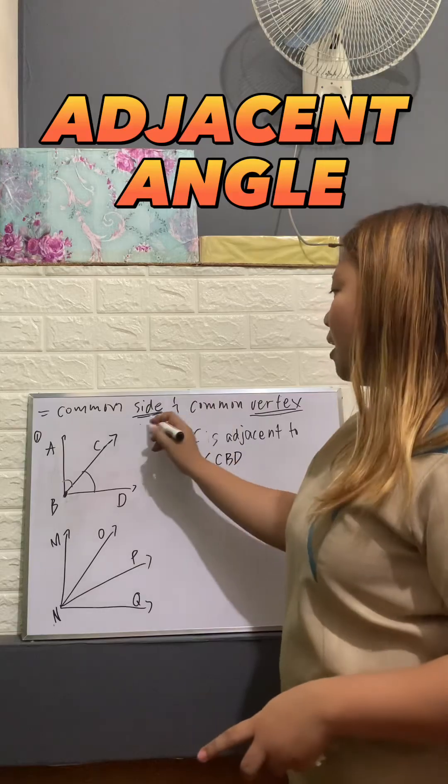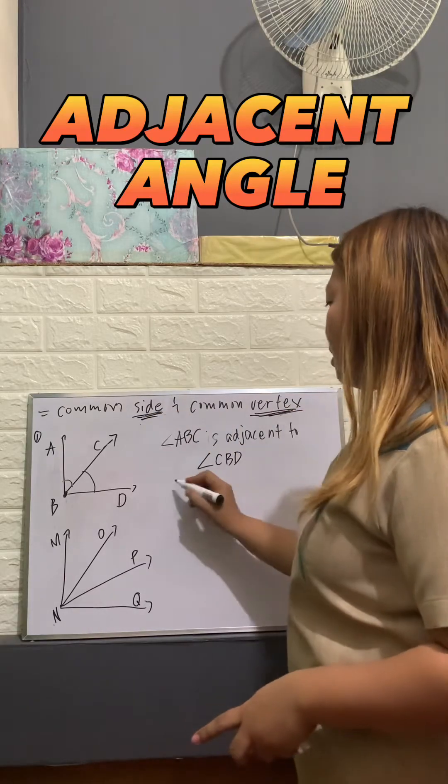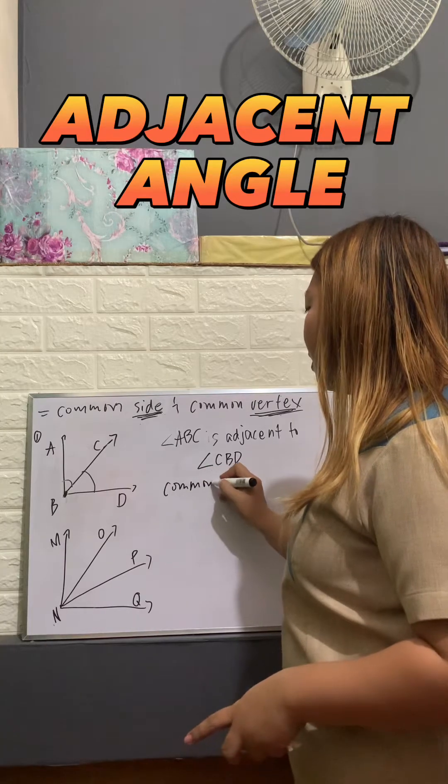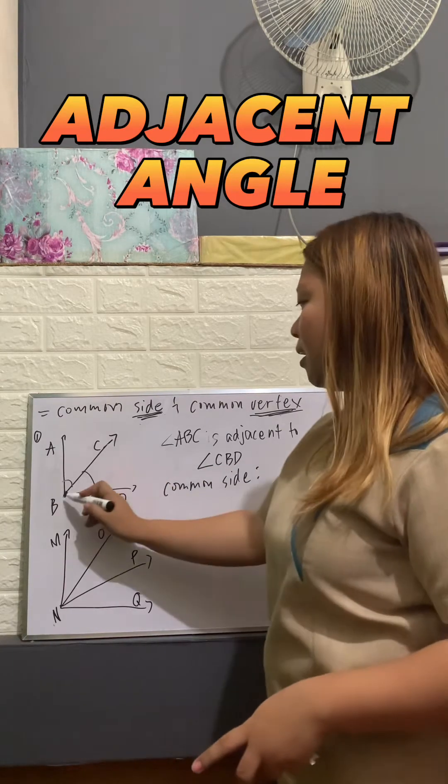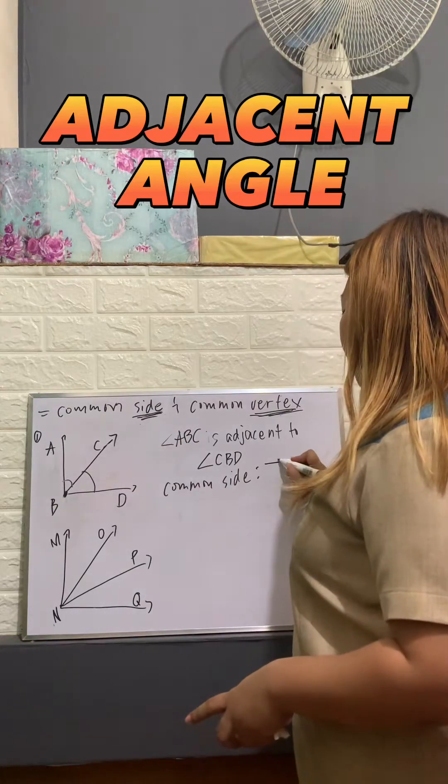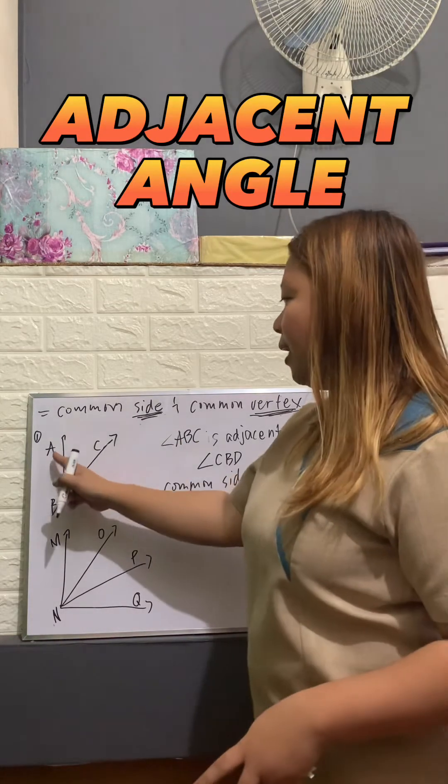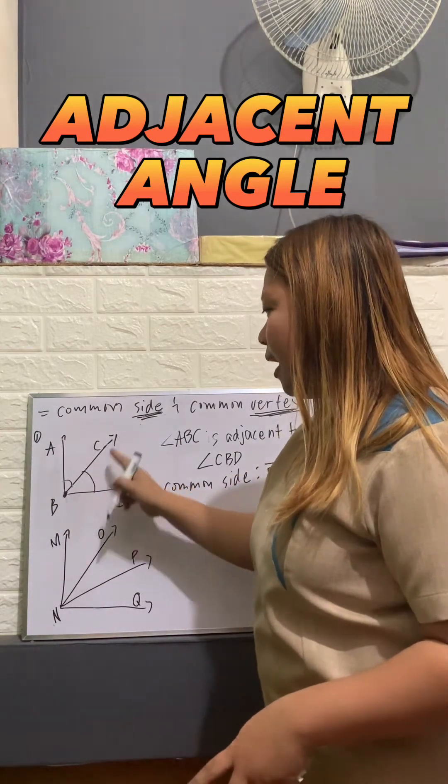Let's identify the common side. What is the common side? It is side BC. Why? Angle ABC has BC, and angle CBD still has BC.